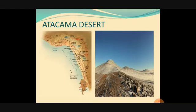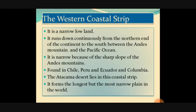You can see the Atacama Desert and the plains of South America, which start from the north and continue southward. It forms the longest but most narrow plain in the world. The countries included in this western coastal strip are Chile, Peru, Ecuador, and Colombia. These are the four main important physical features of South America.